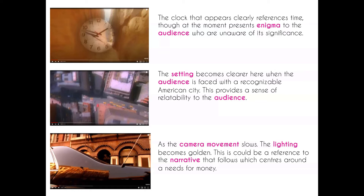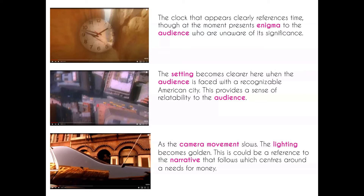We see a shiny car in the forefront of the frame, linking to the idea of wealth. To contrast that, we see a young man in the centre frame – his central position indicates his importance. He's dressed in all black, which could be a reference to his death which is about to come in the narrative, but could also represent the negative aspects of what he's involved in. This dress code is particularly noticeable when contrasted to his mother in the centre shot: she's displayed in more high-key lighting, appearing bright and golden, while he's viewed in darkness and shadows. This creates binary opposition within the frame and the narrative as a whole, indicating which side the audience should be supporting.